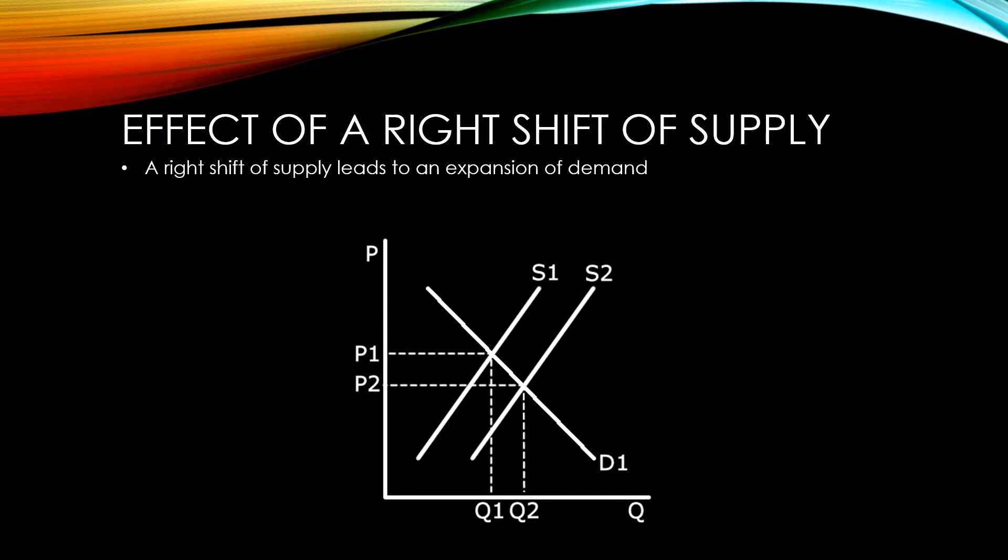A right shift of supply would lead to an expansion of demand. The result of a right shift of supply is higher equilibrium quantity sold and a lower equilibrium price.